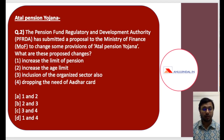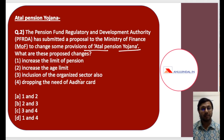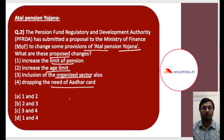The next question is related to Atal Pension Yojana. The PFRDA has submitted a proposal to the Ministry of Finance to change some provisions of Atal Pension Yojana. Remember that these have not been changed yet, but they might get changed before the examination, so it's important to cover these proposed changes. The proposed changes are: 1) increase the limit of pension, 2) increase the age limit, 3) inclusion of organized sector, 4) dropping the need for Aadhaar card. The answer is number one and number two — increasing the limit of pension and increasing the age limit.